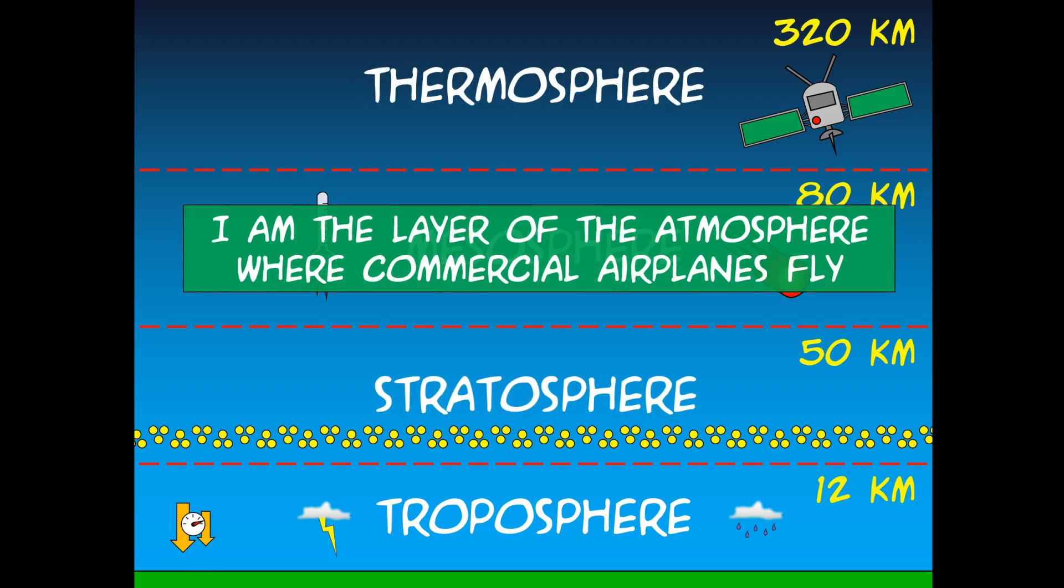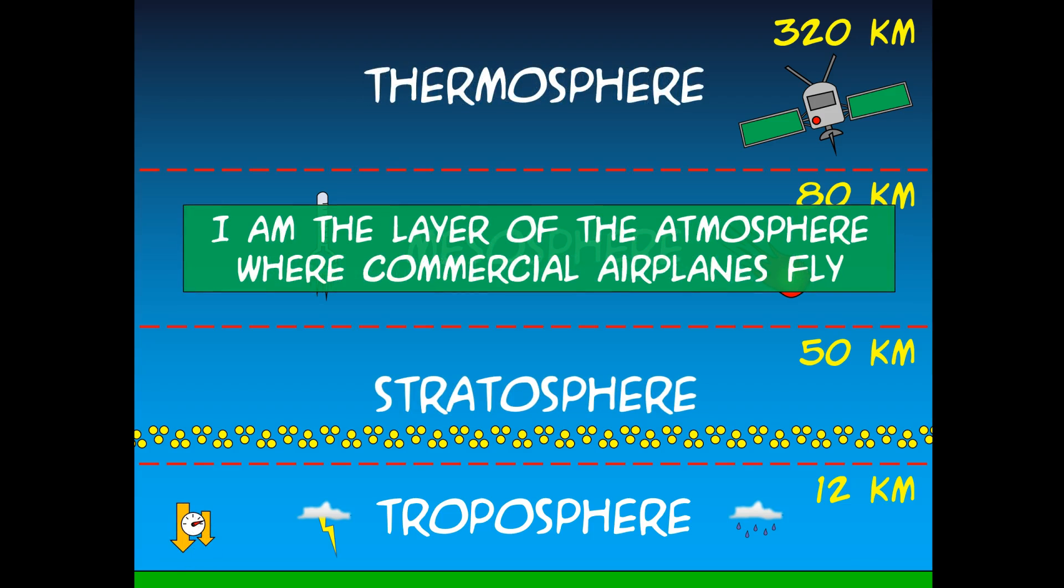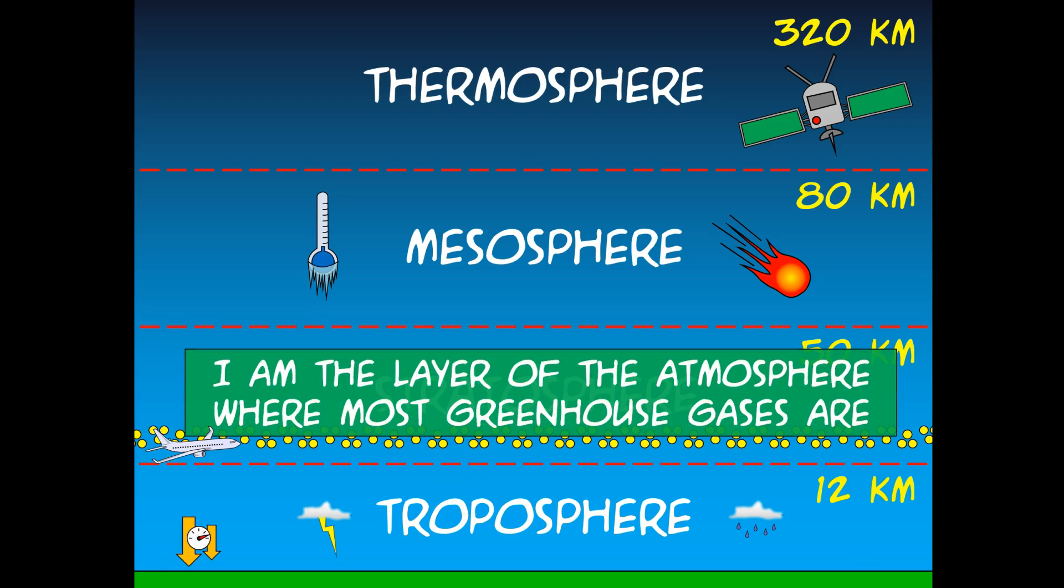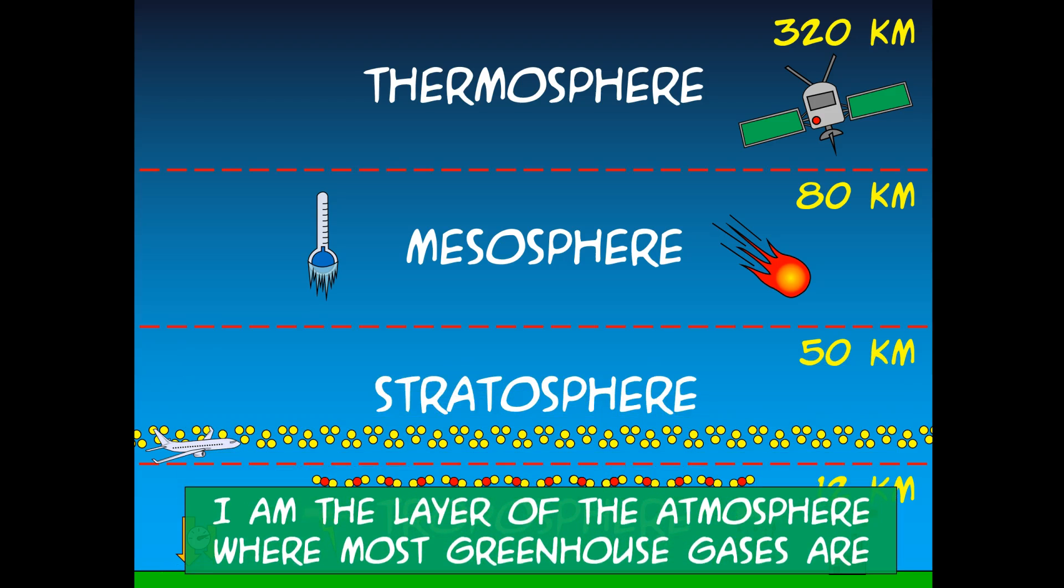What's our next question? This is the layer of the atmosphere where commercial airplanes fly. Any guesses there? The stratosphere. Why do you think that is? Commercial airplanes fly in the bottom part of the stratosphere because they can fly above the weather and have much less interference for the flight. This is the layer of the atmosphere where most greenhouse gases are. Where would that be? I hope you guessed the troposphere. That's where most greenhouse gases are produced and trapped.